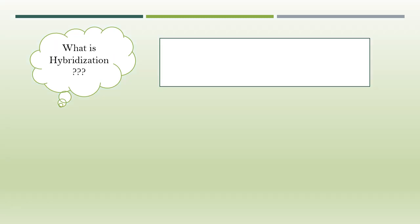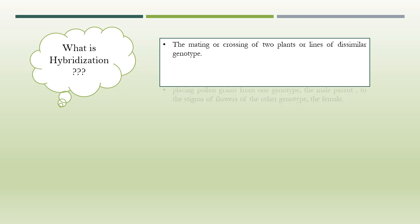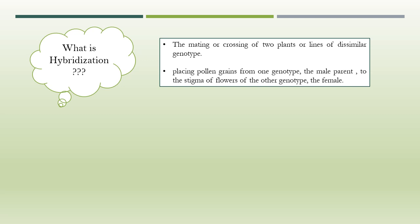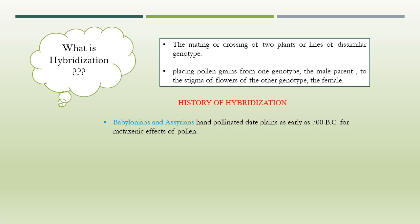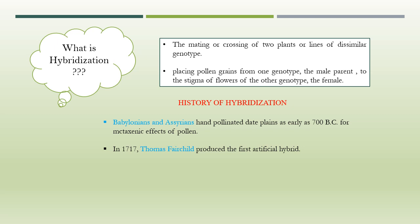Hybridization is the most common method of crop improvement, and the vast majority of crop varieties have resulted from hybridization, defined as mating or crossing of two plants or lines of dissimilar genotype — placing pollen grains from one genotype (the male parent) to the stigma of flowers of the other genotype (the female). Babylonians and Assyrians hand-pollinated date palm as early as 700 BC for metaxenic effects of pollen. Metaxenia is the effect of pollen on maternal tissues of fruit. Sex in plants was discovered by Camerarius in 1694. In 1717, Thomas Fairchild produced the first artificial hybrid, the Fairchild's mule, by crossing Sweet William (Dianthus barbatus) with Carnation (Dianthus caryophyllus).